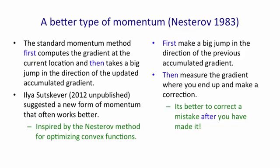One way of thinking about what's going on is in the standard momentum method, you add in the current gradient, and then you gamble on this big jump. In the Nesterov method, you use your previous accumulated gradient, you make the big jump, and then you correct yourself at the place you've got to.